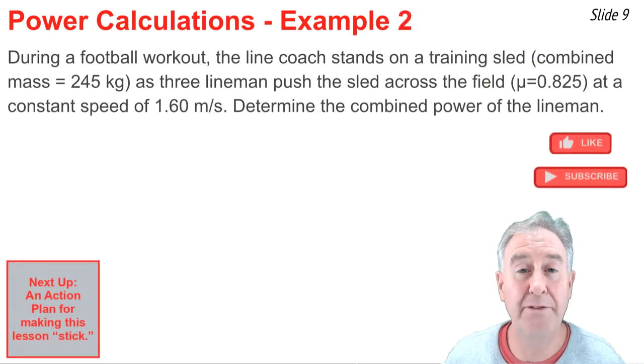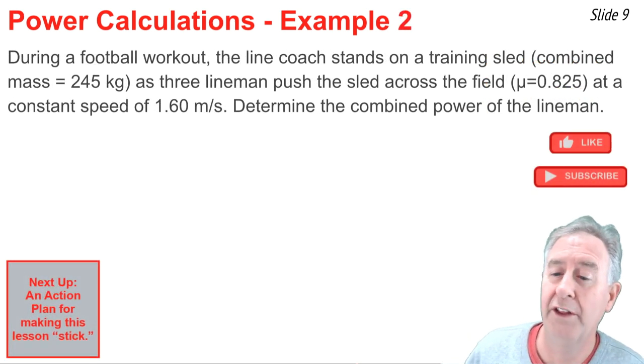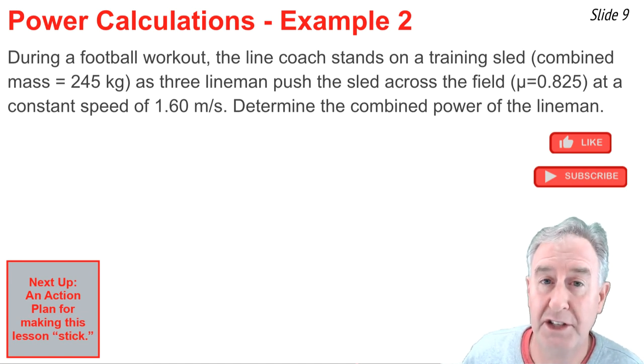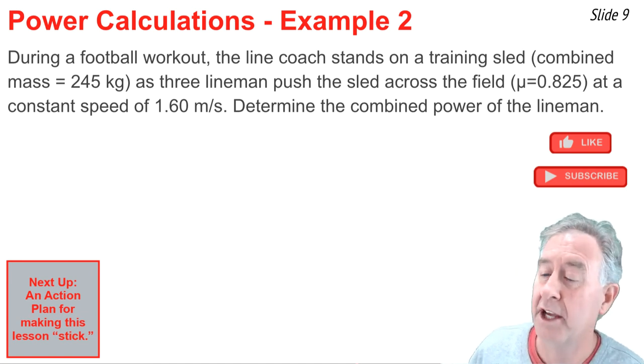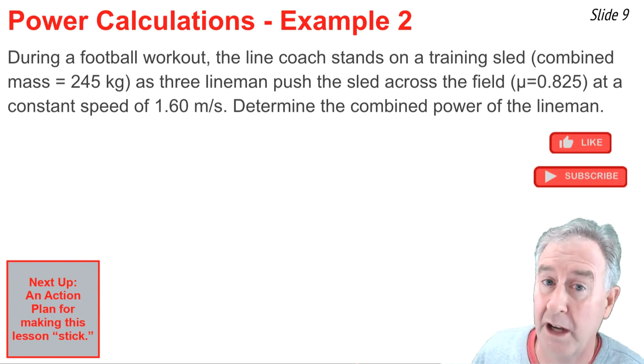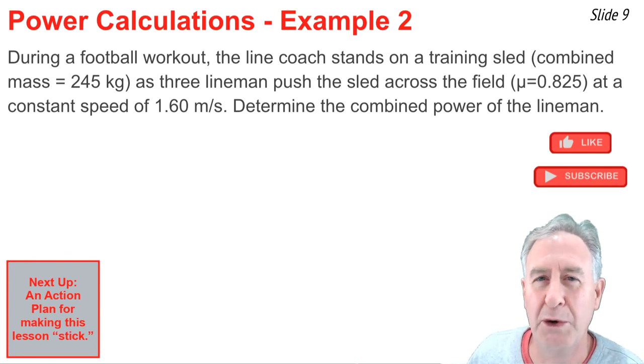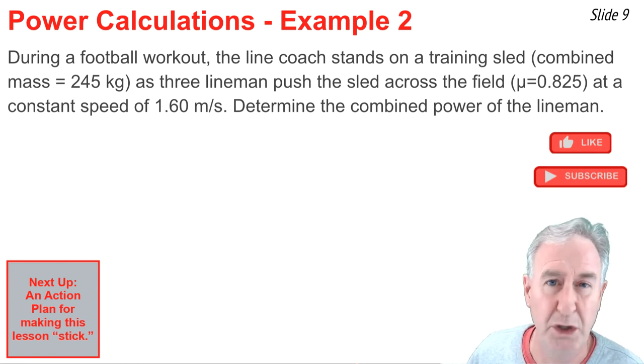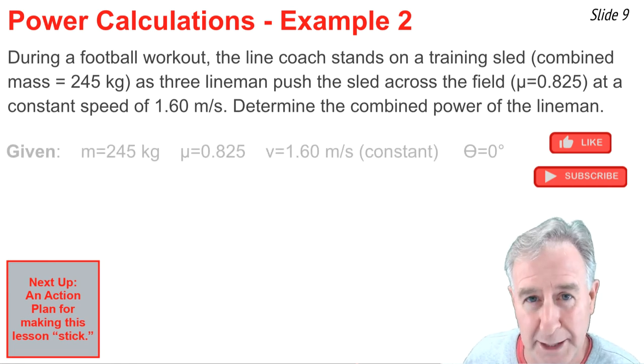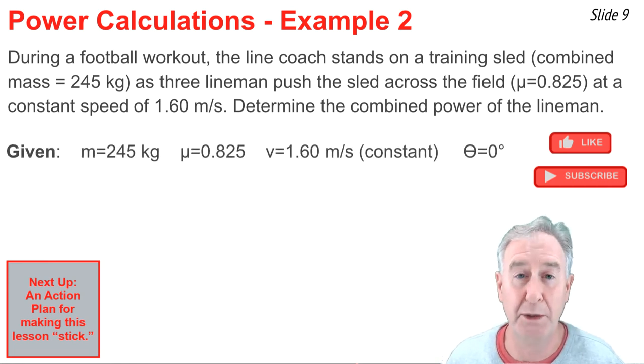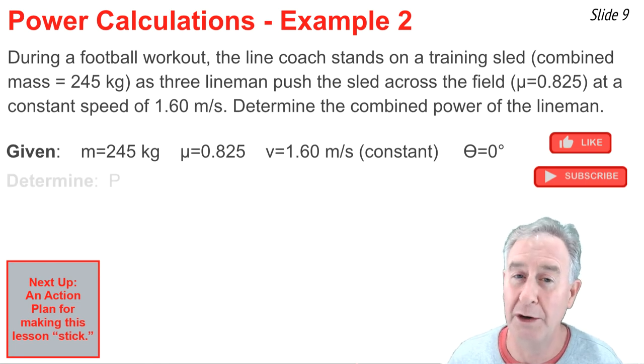Our second and final example involves a horizontal motion. During a football workout, the line coach stands on a training sled with a combined mass of 245 kilograms, as three linemen push the sled across the ground with a constant speed of 1.60 meters per second. The coefficient of friction, mu, between the sled and the ground is 0.825. We want to know the power delivered by the linemen. So, as always, we're going to begin by listing what we know. We know the m, we know the mu, we know the velocity of the sled, and we know that the angle between the force the linemen apply and the direction that the sled moves is 0 degrees.